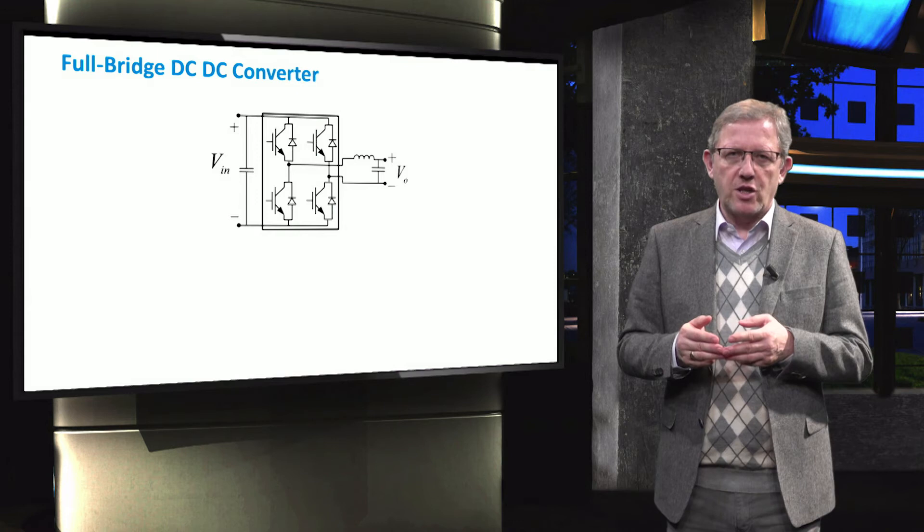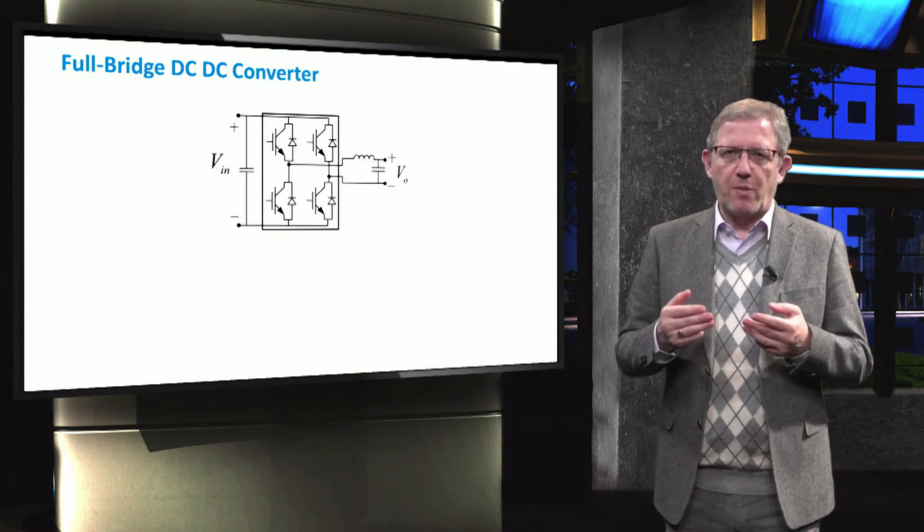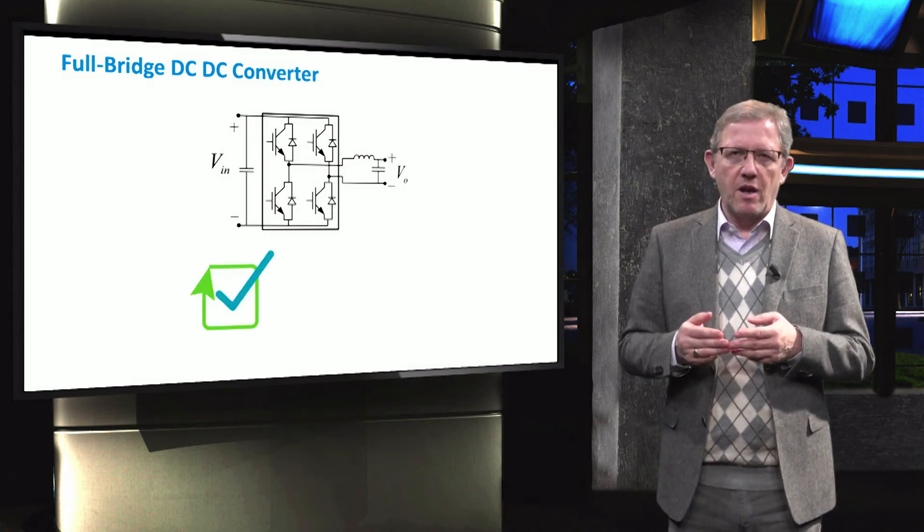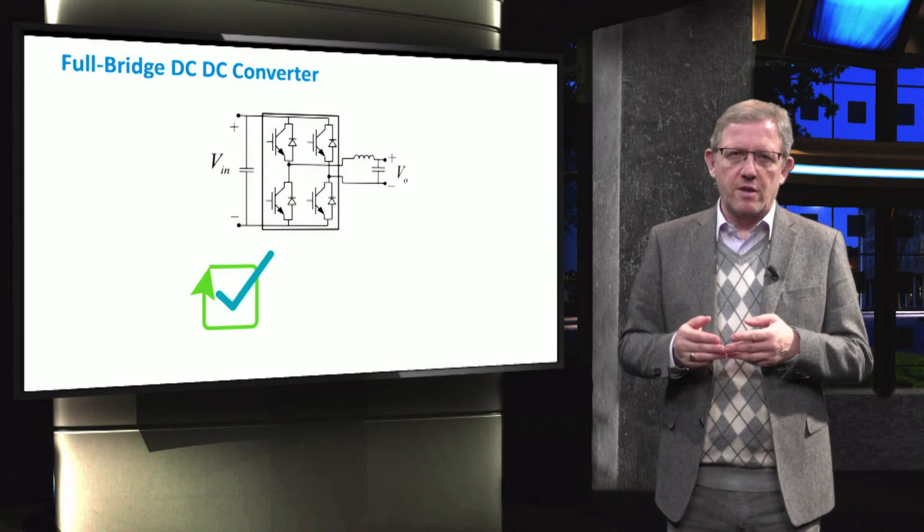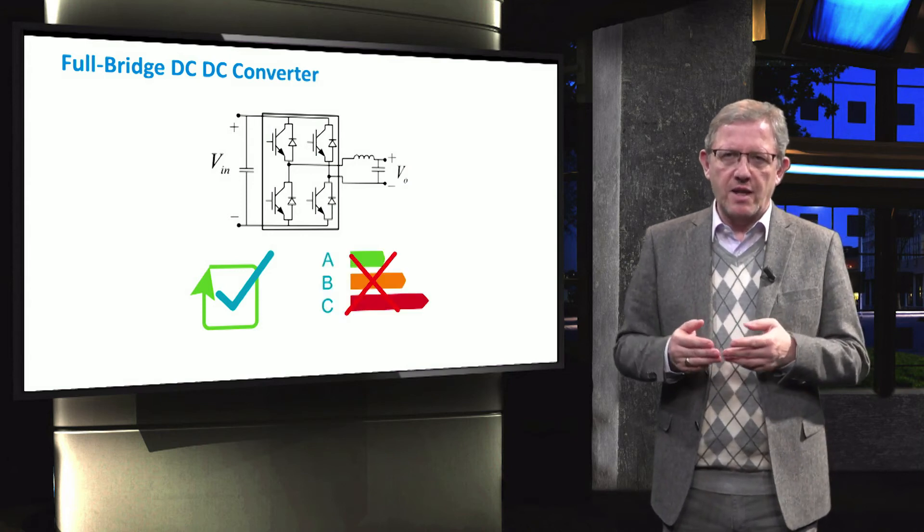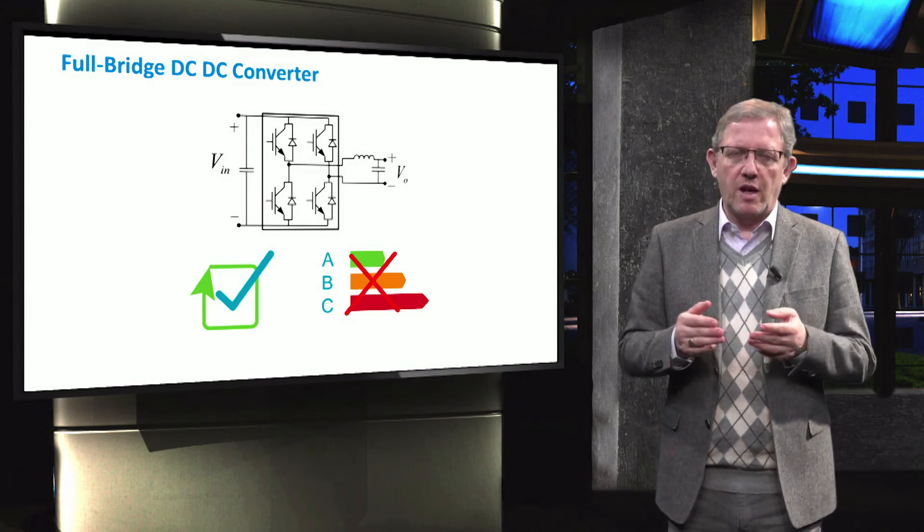Note that the bidirectional flow becomes possible thanks to the diodes in anti-parallel with the switches. These converters have a higher reliability compared to the buck and boost converters. The full bridge also does not provide very high efficiency and is not able to achieve a large ratio between input and output voltages.